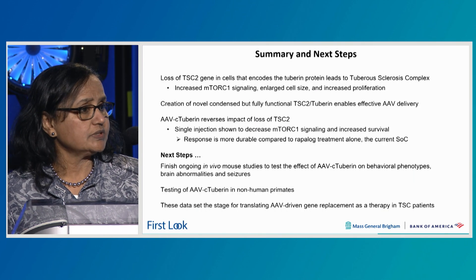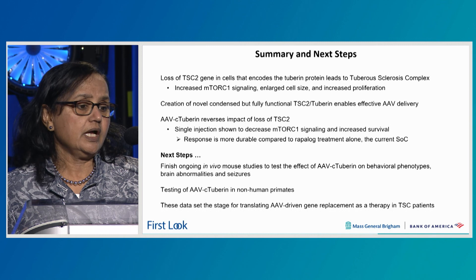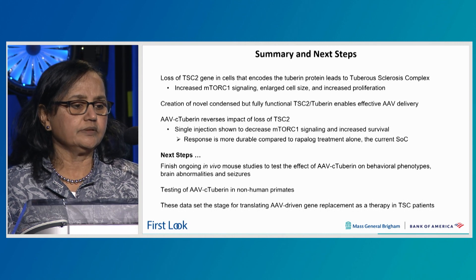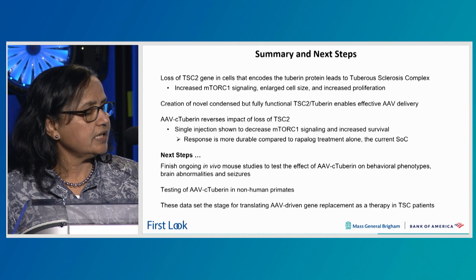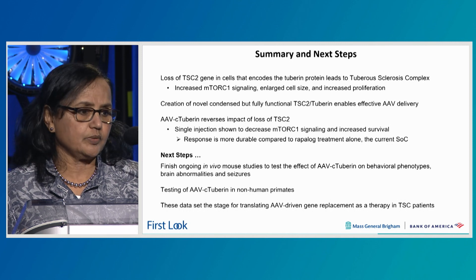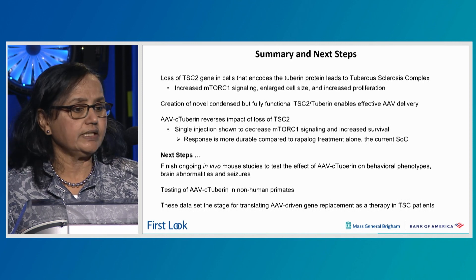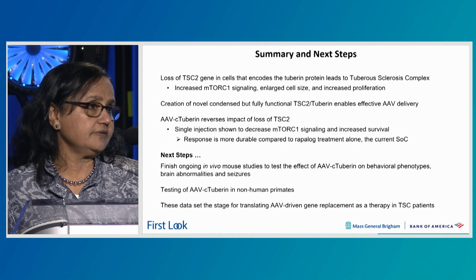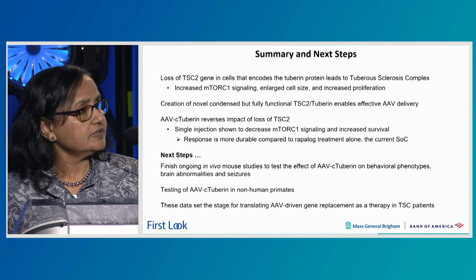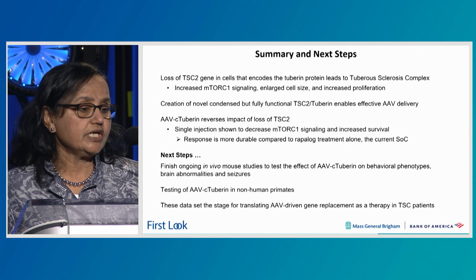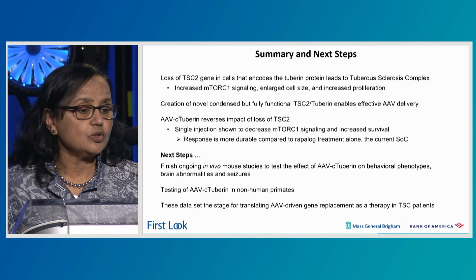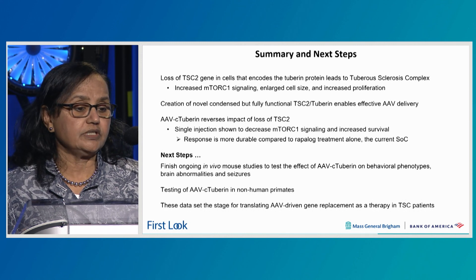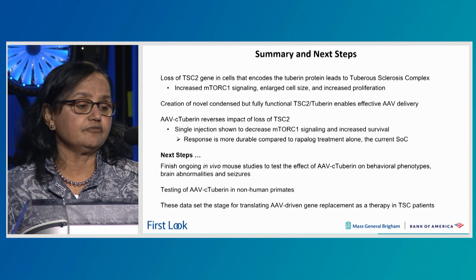In summary, loss of the TSC2 gene — which encodes tuberin — leads to tuberous sclerosis complex with increased mTORC1 signaling, enlarged cell size, and proliferation. We have created a novel condensed form of tuberin which is fully functional and enables effective AAV delivery. A single injection of AAV C-tuberin reverses the impact of loss of TSC2, decreases mTORC1 signaling, and increases survival. The response is more durable compared to rapalog treatment alone, which is the current standard of care.